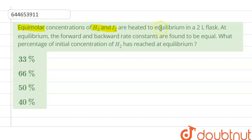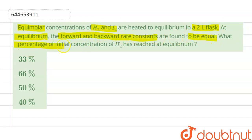Our question is: equimolar concentrations of H₂ and I₂ are heated to equilibrium in a two-liter flask. At equilibrium, the forward and backward rate constants are equal. What percent of the initial concentration of H₂ has reacted at equilibrium?